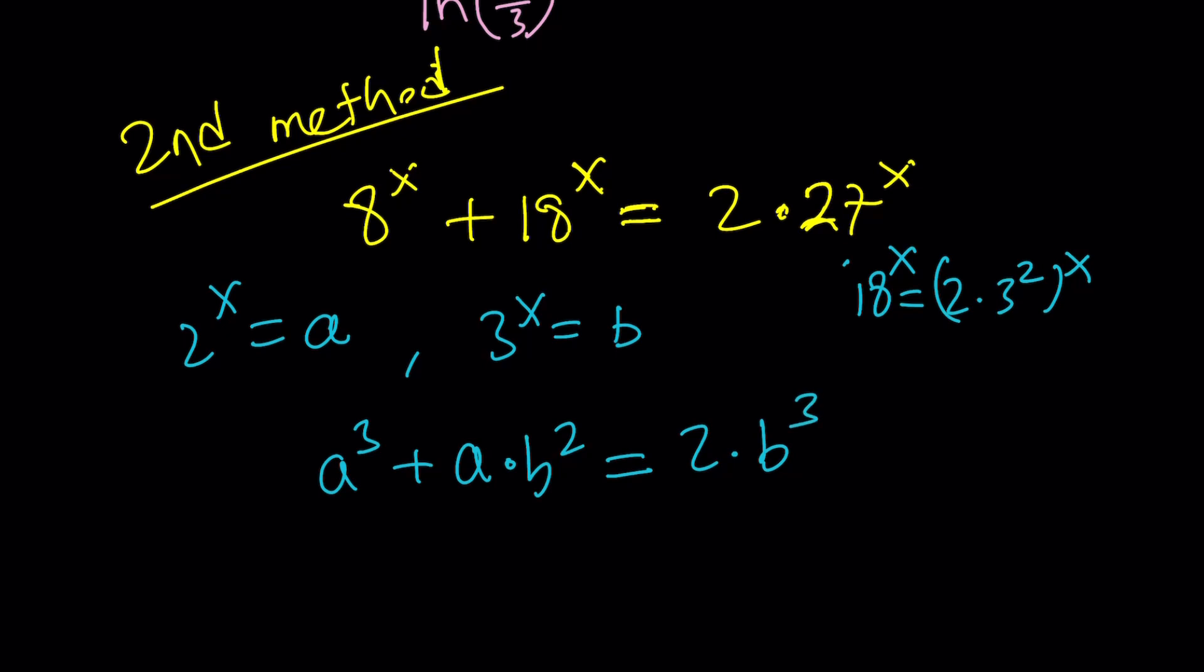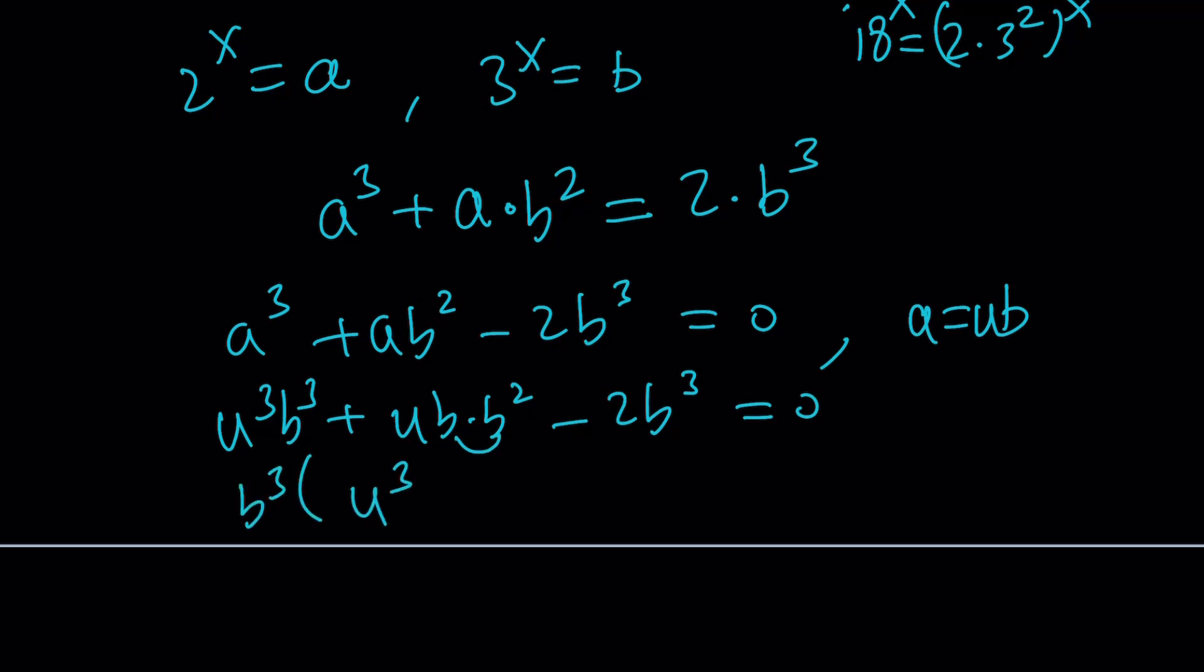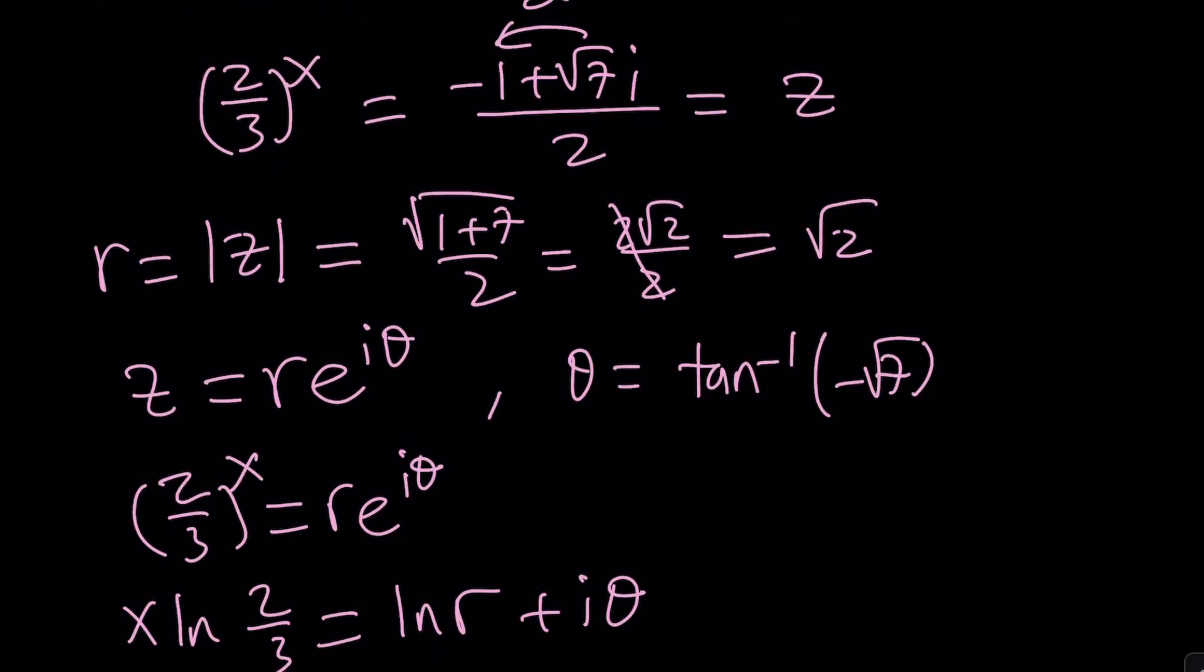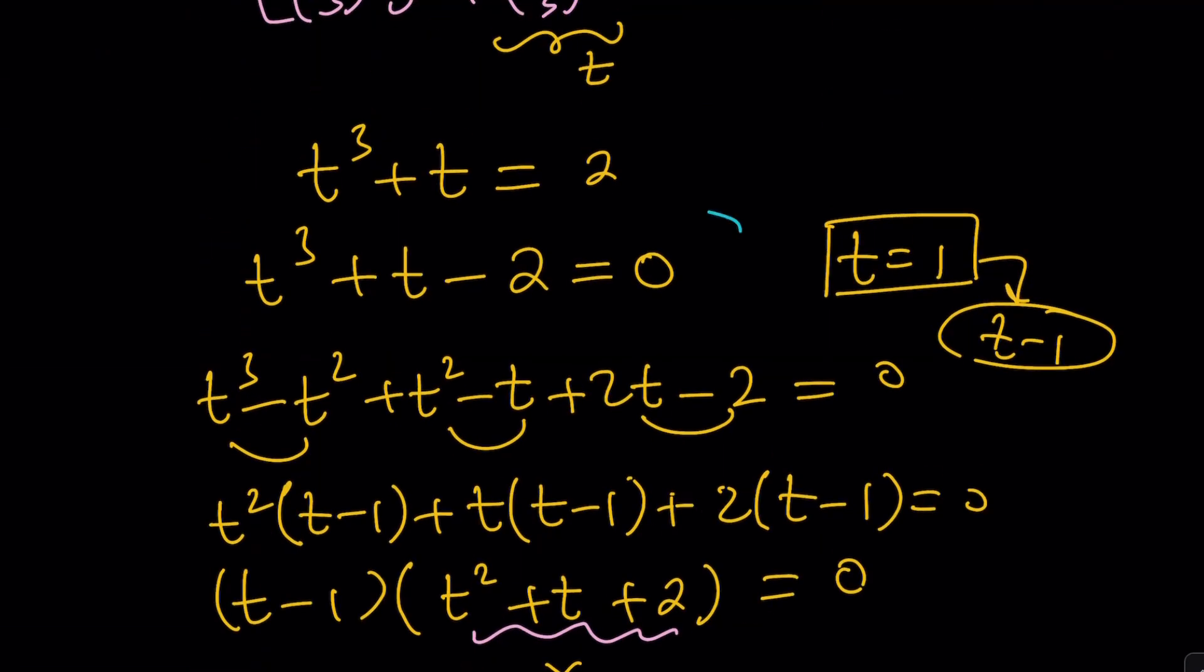Notice that this is a homogeneous equation. Let's put everything on the same side first. Why is it homogeneous? Because when you replace a with something like ub, then you're going to notice that something cancels out. So we're going to get u cubed b cubed plus ub times b squared minus 2b cubed equals 0. And then from here, you get b cubed. So you can factor out b cubed, and inside the parentheses, you get u cubed plus u minus 2 equals 0. And guess what? This gives you the same equation that we got before by using substitution, the cubic one, this one.